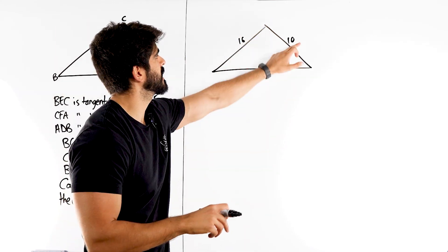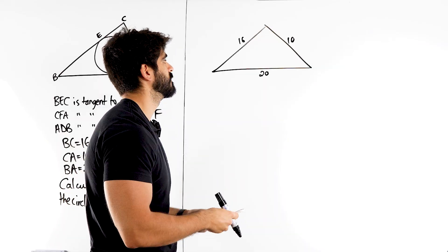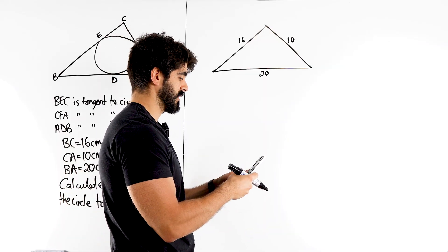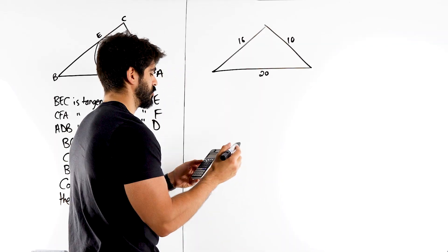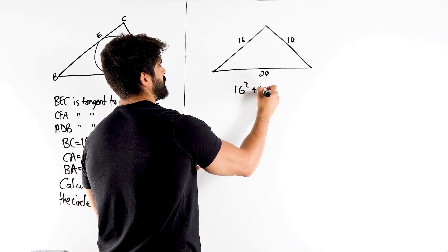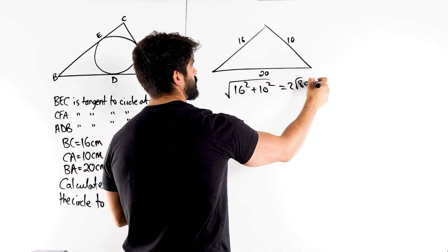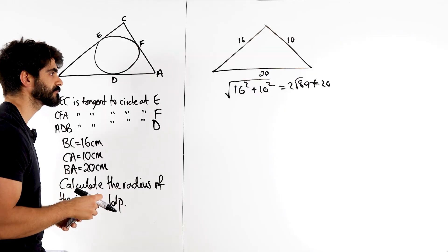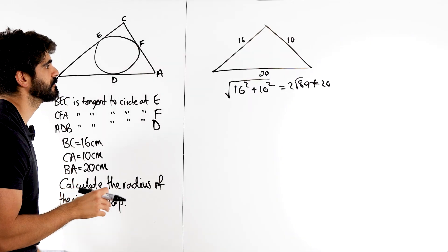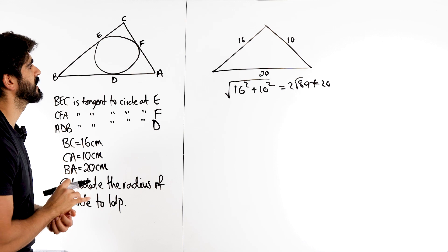Now you should always double check this but is that a right angle? We can check by doing 10 squared plus 16 squared and rooting that and see if that gives you 20. Well 16 squared plus 10 squared rooted is actually 2 root 89, which is not the same as 20. So it's not a right angled triangle. Okay so that clears one thing up which is annoying. If it was it could potentially make things easier.